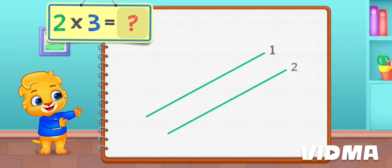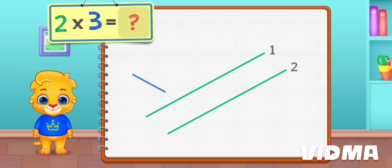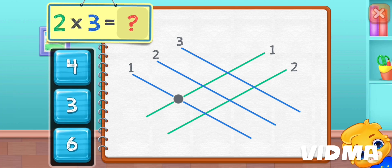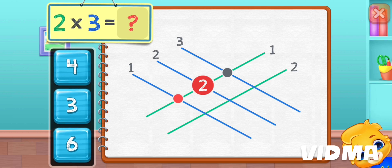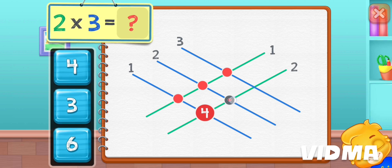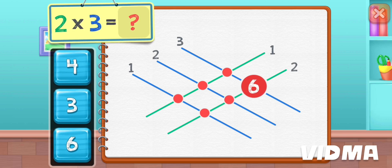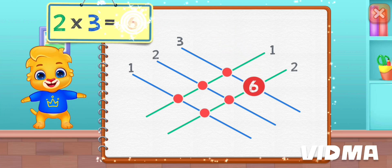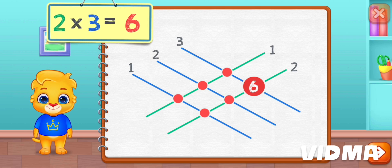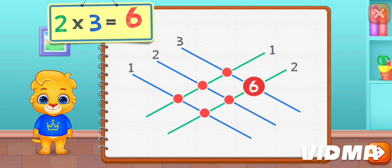Two times three equals — one, two, three, four, five, six. Two times three equals six.